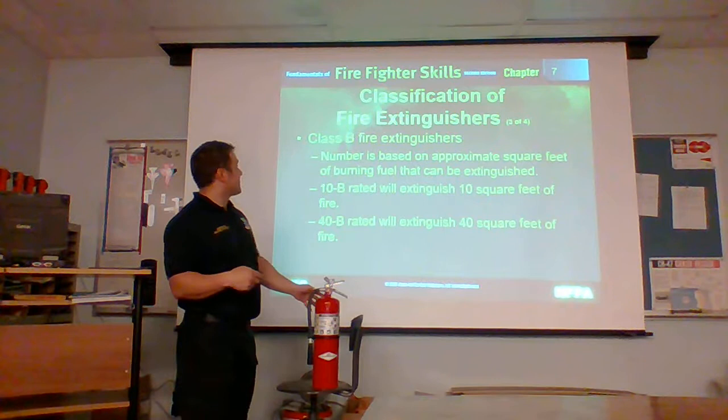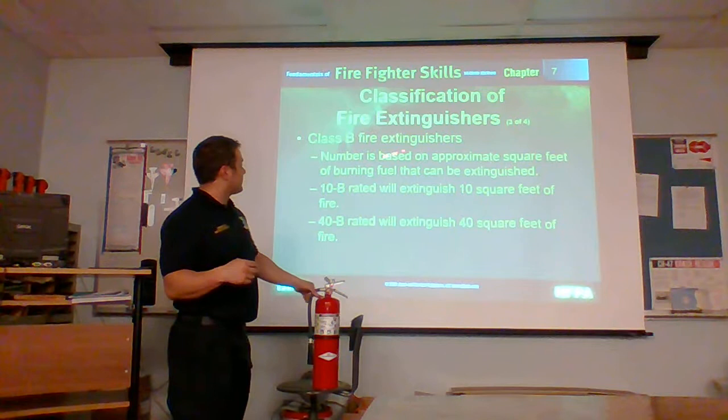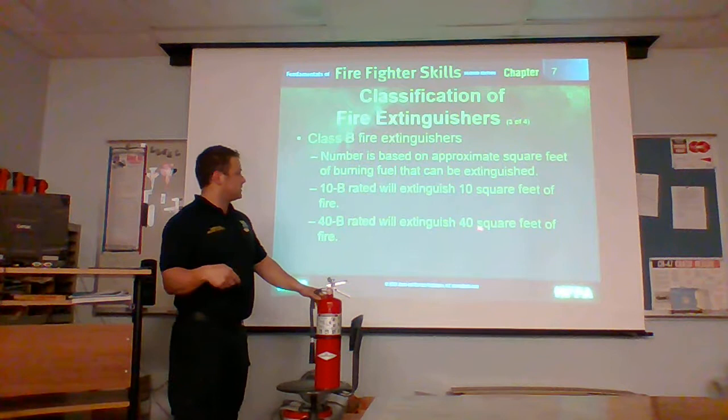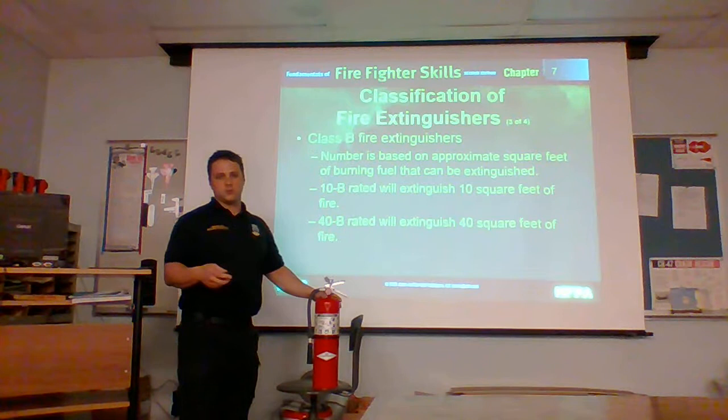We're going to go on to Class B fire extinguishers. The number is based on approximate square feet of a burning fuel that can be extinguished. A 10B rated would be 10 square feet of fire — not very big, kind of a small trash can of fire. A 40B would be 40 square feet of fire — a little bit bigger.